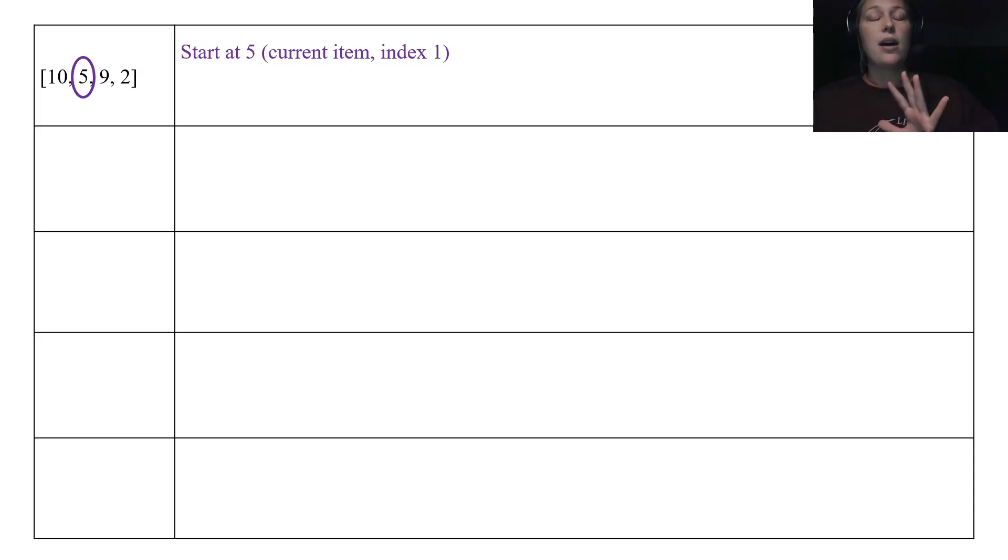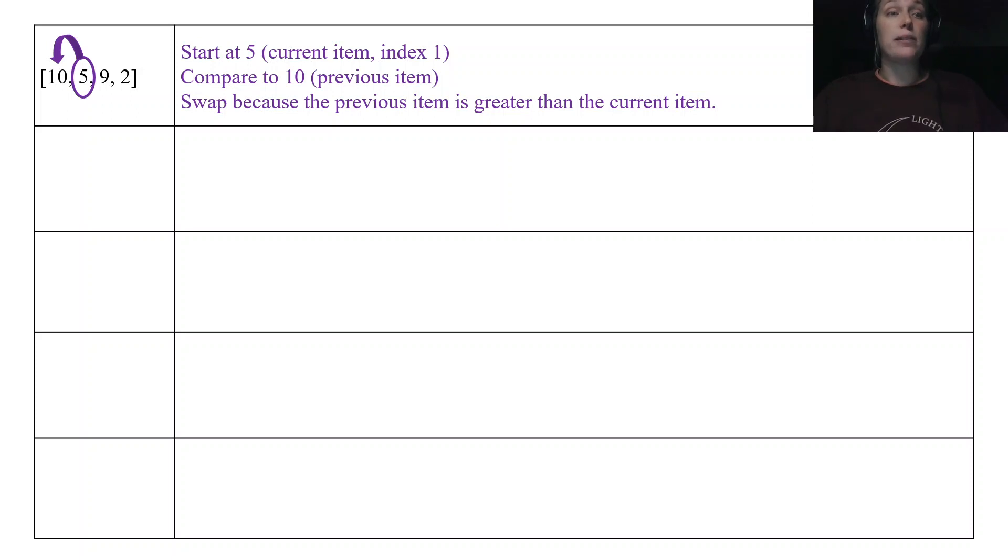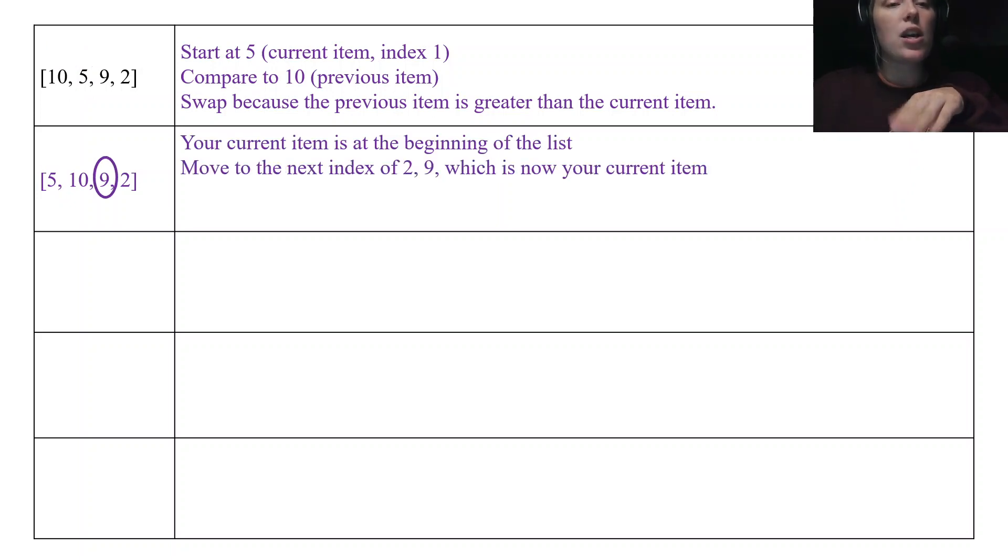So we're gonna start at 5. That is our current item at index 1. We're gonna compare it to the previous item, which is element 10. It asks the question, is 5 less than 10? And it is. So because the previous item is greater than the current item, we're gonna swap those two values. So the 5 goes there and then the 10 gets put into 5's position.